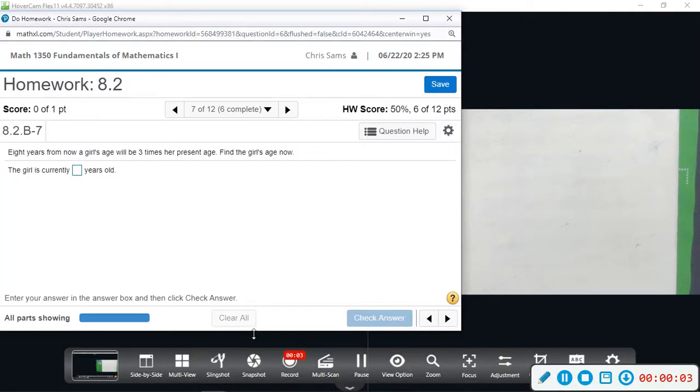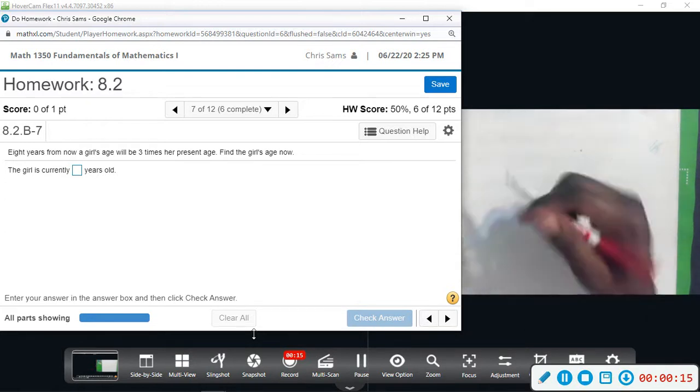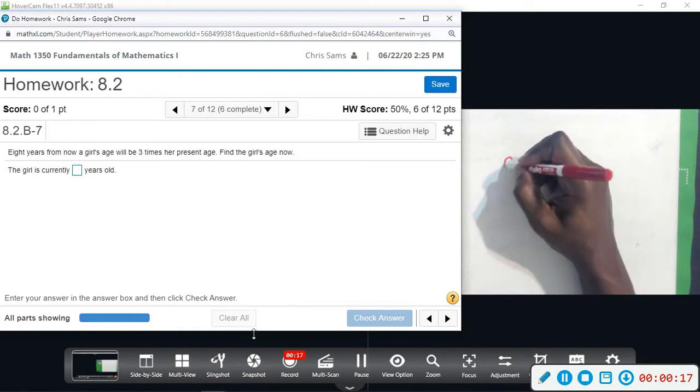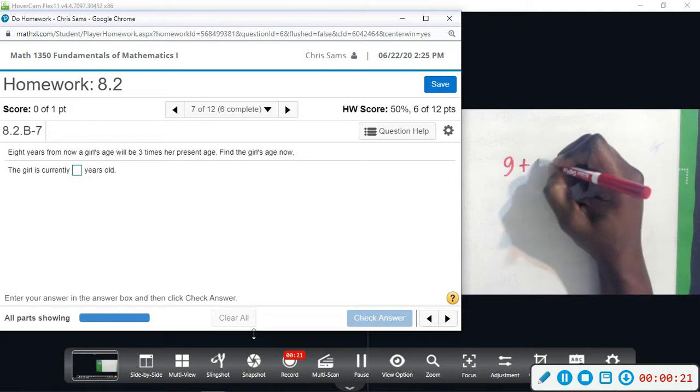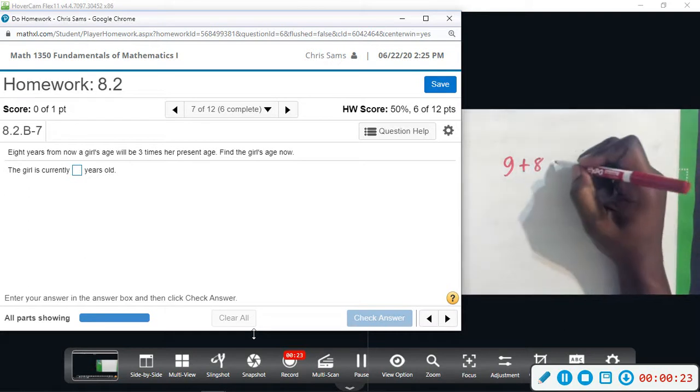All right, number seven. Eight years from now a girl's age will be three times her present age. Find the girl's age now. Okay, so her age, we'll just say G plus eight, is going to be equal to three times her current age.